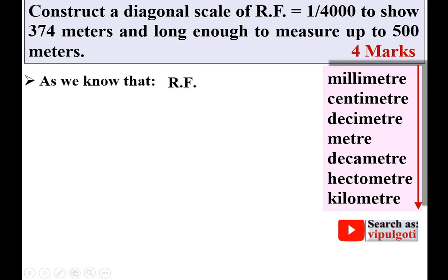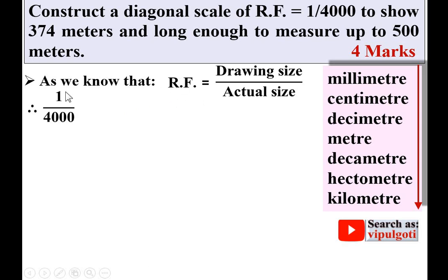RF is equal to drawing size upon actual size. RF is given as 1 upon 4000. So, RF equals 1 upon 4000 equals length of drawing (LOD) divided by actual size. The actual size is the maximum distance to be measured by the scale, which is given as long enough to measure up to 500 meters.